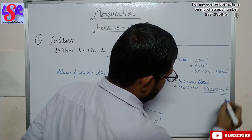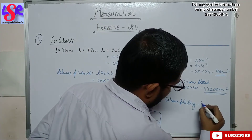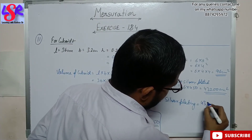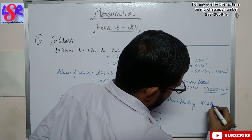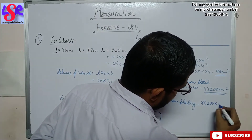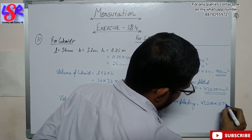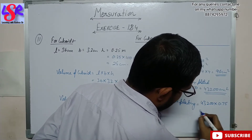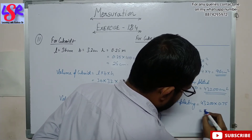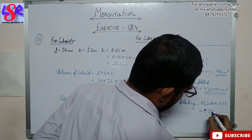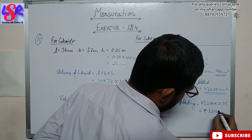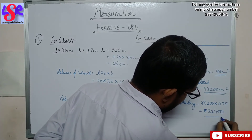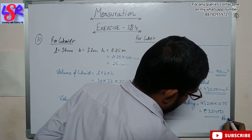The cost of silver plating is 43200 × 0.75, which equals rupees 32400 as the answer.